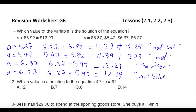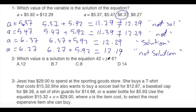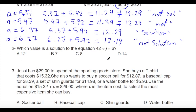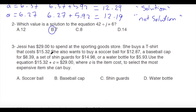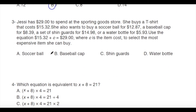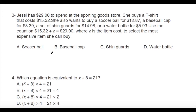So the answer is a equals 6.37. Next question: which value is the solution to the equation 42 divided by j equals 6? We need the number that multiplied by 6 equals 42 — it's 7, so the answer is j equals 7.